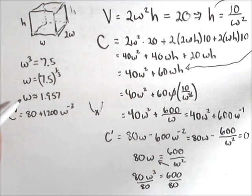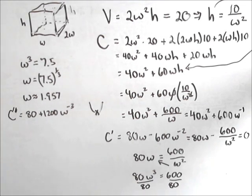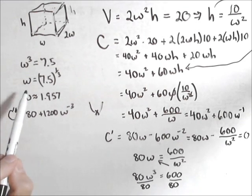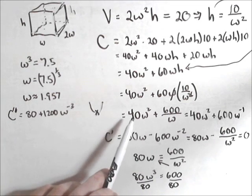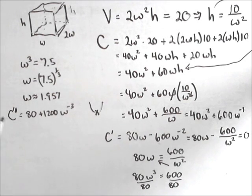Now to get the minimum cost, we could find h. But we're just looking for the cost. So all we need to do is plug that back in to our cost function which we've found in terms of w.